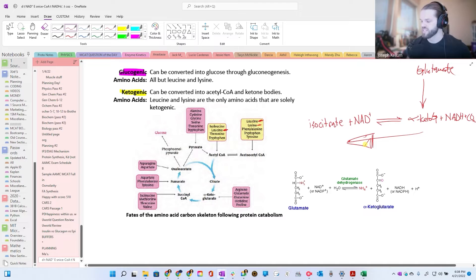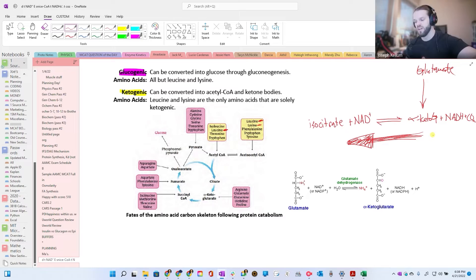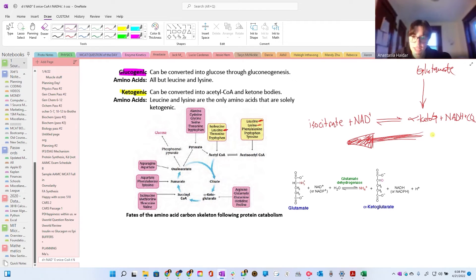That doesn't mean we're going to take all this alpha-ketoglutarate and turn it back into isocitrate. That's not really what's going to happen. It's just that we're going to now slow our production of alpha-ketoglutarate. Therefore, levels of isocitrate are going to increase a little bit. I see.